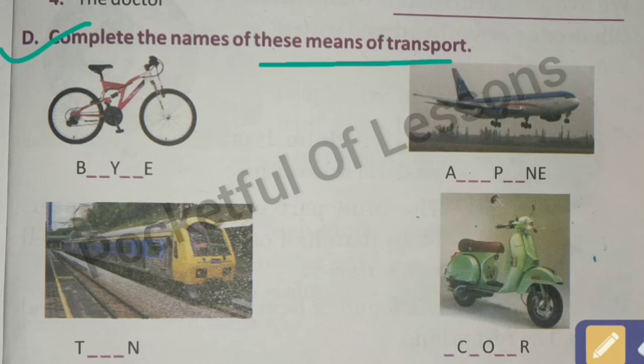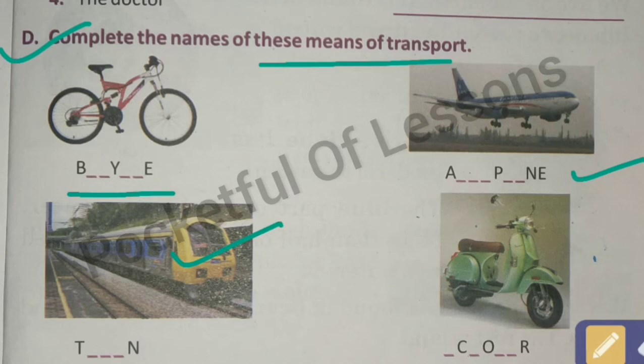The spelling of bicycle is B-I-C-Y-C-L-E. Fill in the missing letters here. Next is aeroplane - the spelling of aeroplane is A-E-R-O-P-L-A-N-E. Hope it is clear.